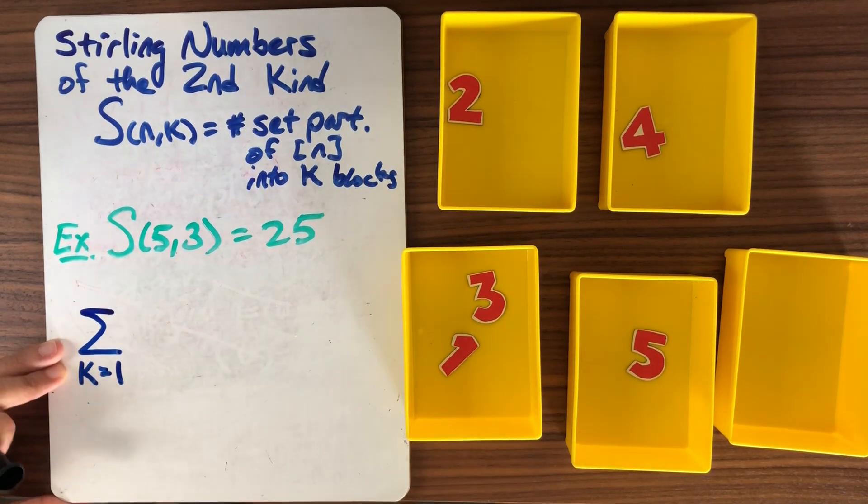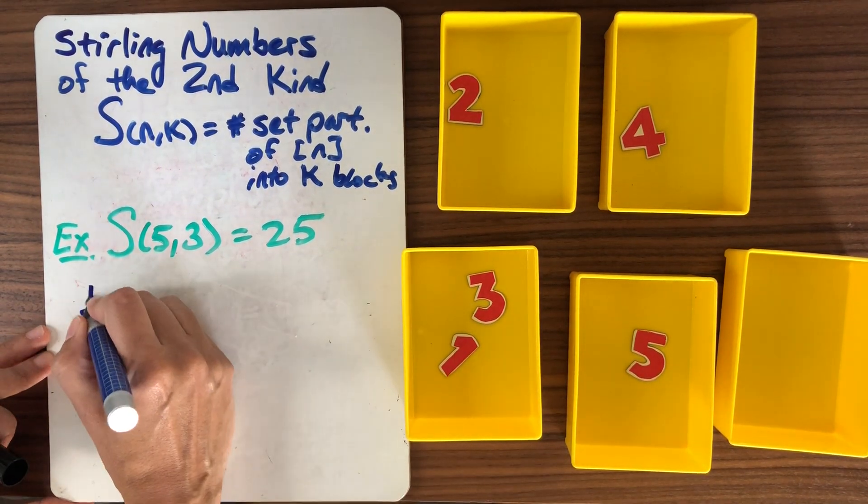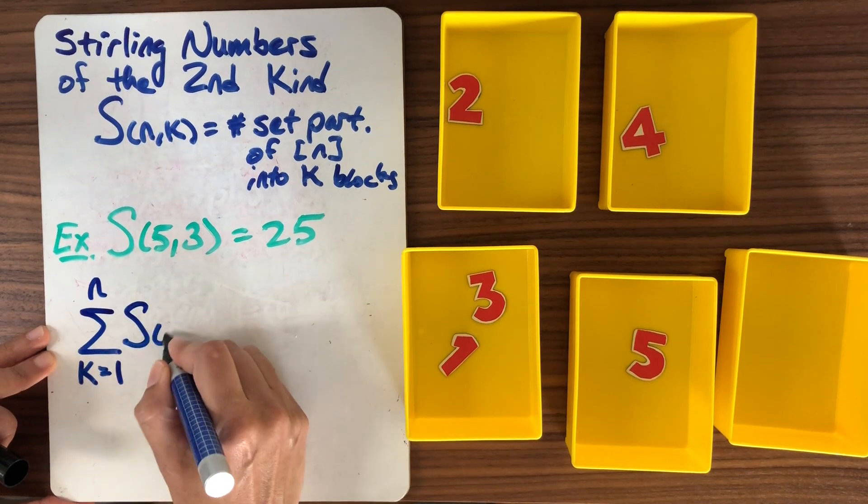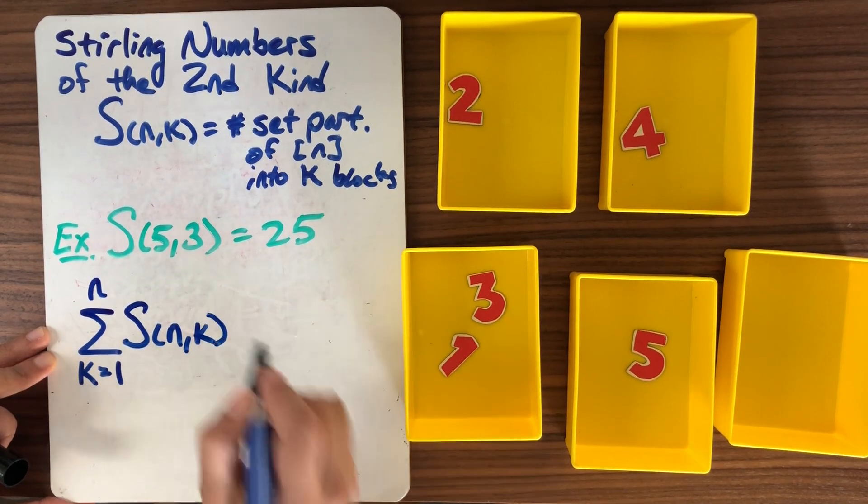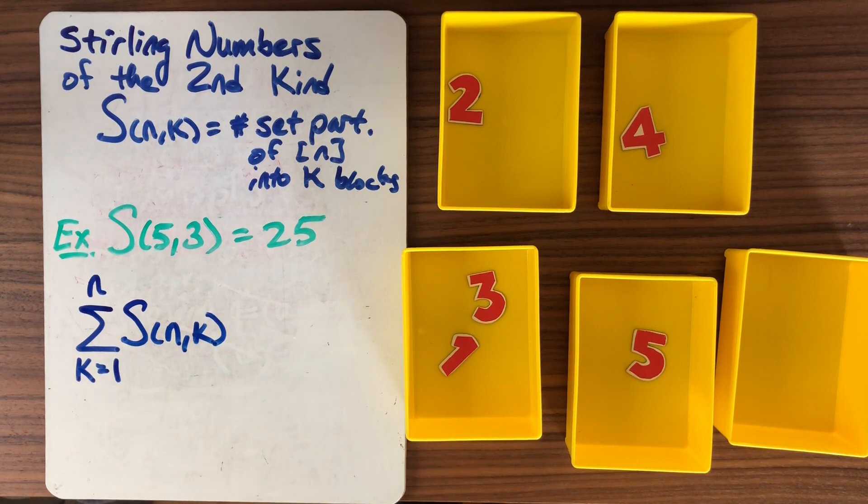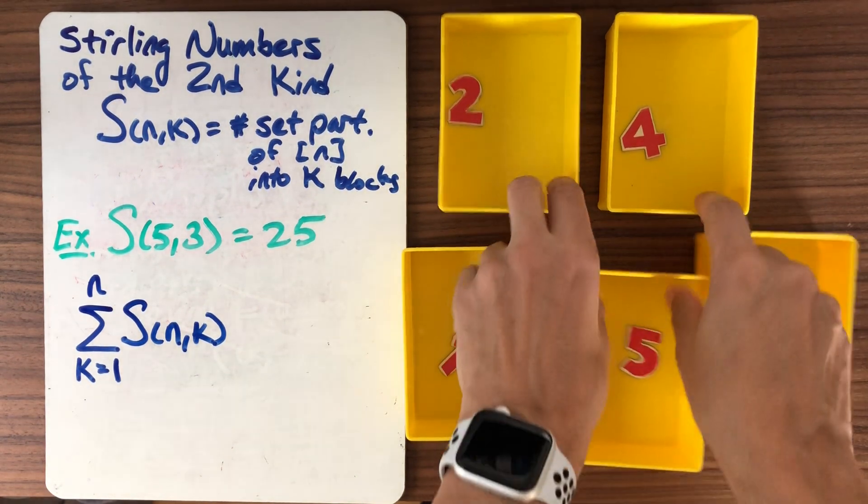So I can think about adding these guys up. So the sum, again, the fewest number of blocks is 1 and the most is n, of S(n,k). And I can ask myself, well, what can I do with these numbers? So it turns out these numbers are very interesting.